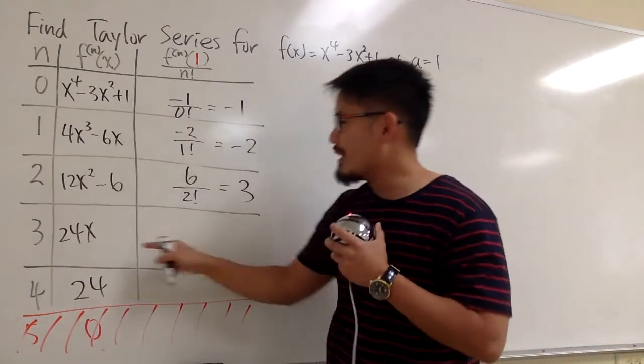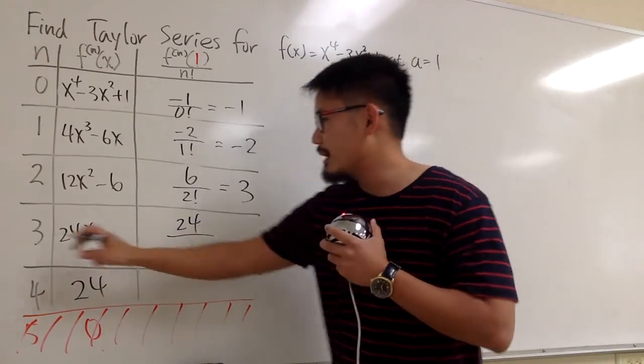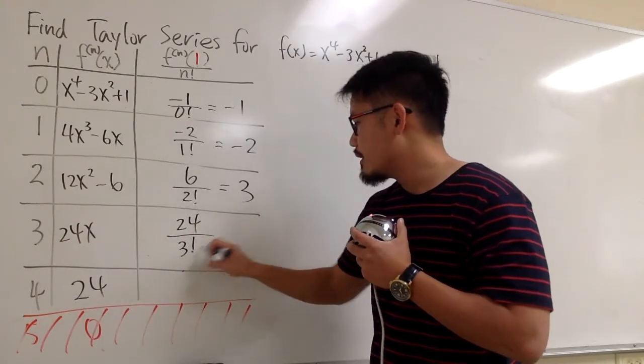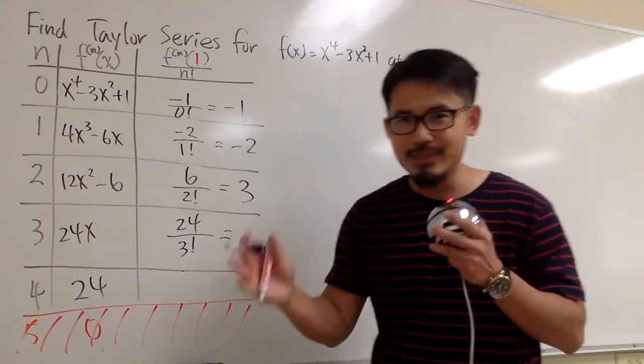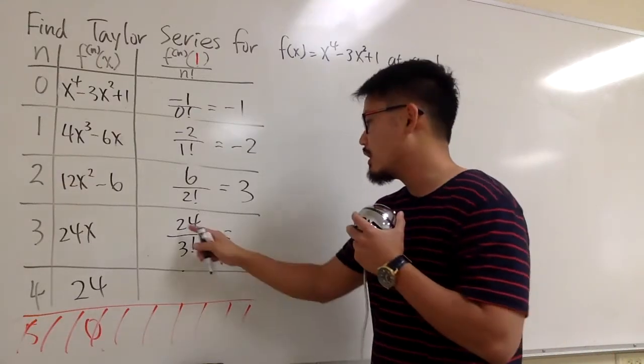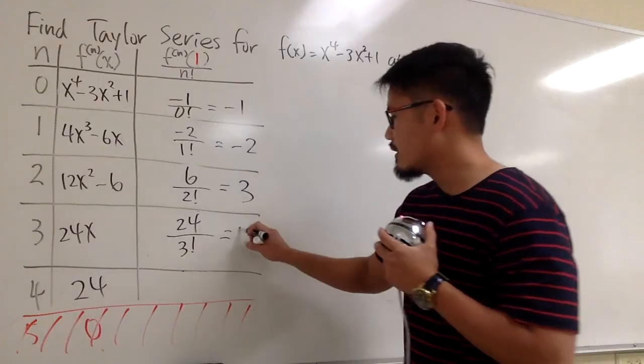Next, plug in 1 into here, we have 24, but then divided by 3 factorial. 3 factorial means 3 times 2 times 1, which is 6. 24 divided by 6, we get 4.